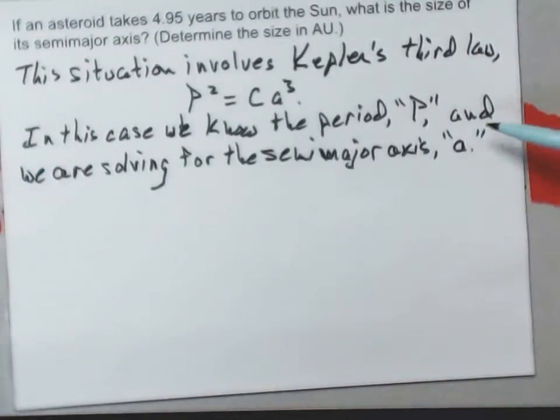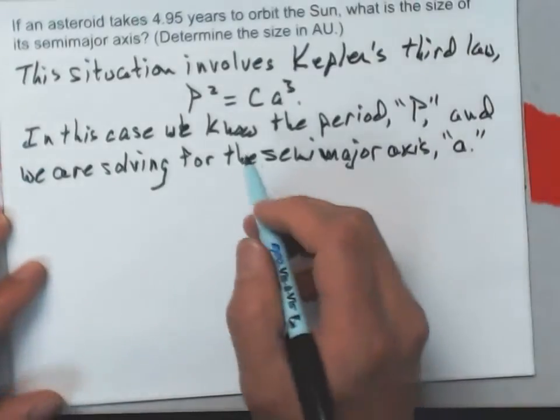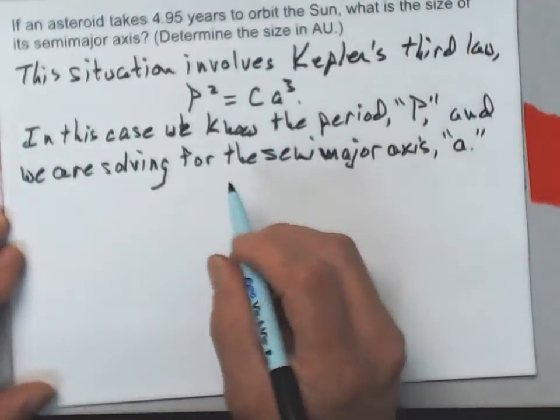In this case we know the period P, and we are solving for the semi-major axis A. So I would just go ahead and do the algebra for that.